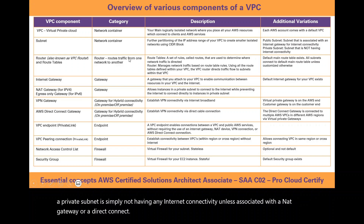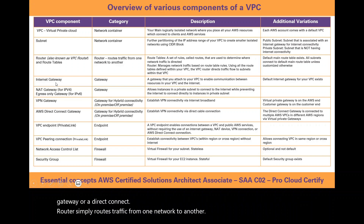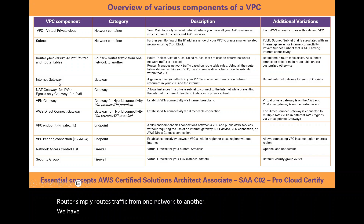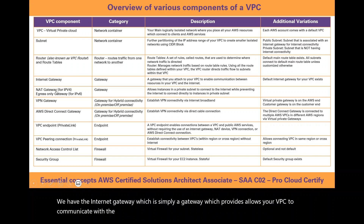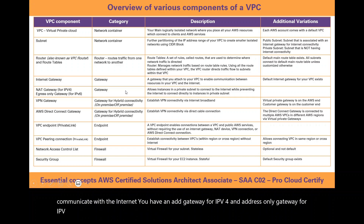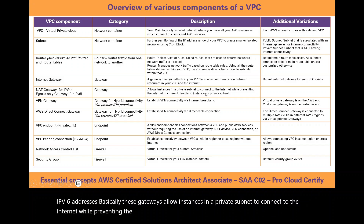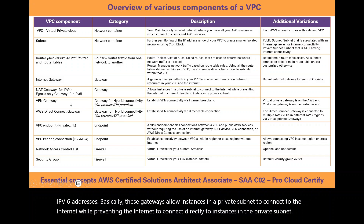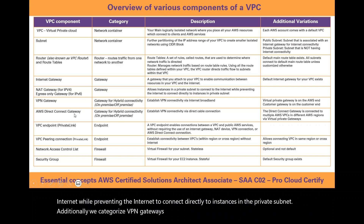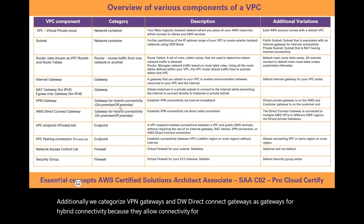A router simply routes traffic from one network to another. The internet gateway allows your VPC to communicate with the internet. You have a NAT gateway for IPv4 and an egress-only gateway for IPv6 addresses, which allow instances in a private subnet to connect to the internet while preventing the internet from connecting directly back to those instances. We categorize VPN gateways and AWS Direct Connect gateways as gateways for hybrid connectivity, because they allow connectivity between on-premises and off-premises environments.